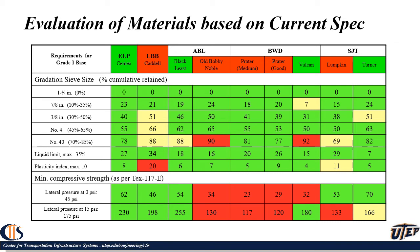We considered one reference material called CEMEX that was all green — meaning it passed all specifications for a high-quality base in Texas — and then a group of other materials from different quarries fairly close to each other, some considered higher quality and some lower quality. Whatever is shown in red is failing the specification, and whatever is in yellow is marginally passing or marginally failing.